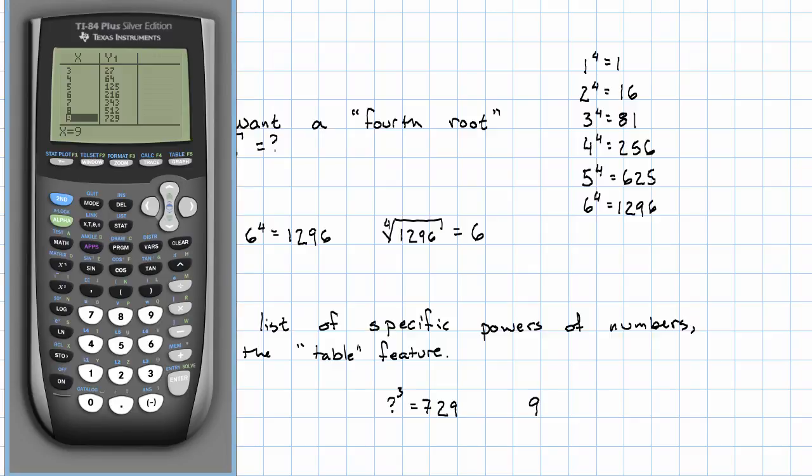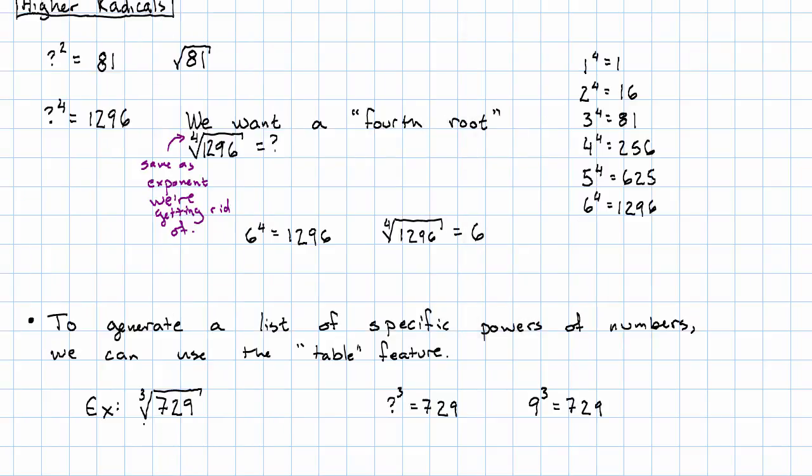9 to the third power is 729. Therefore, the cube root of 729 is 9.